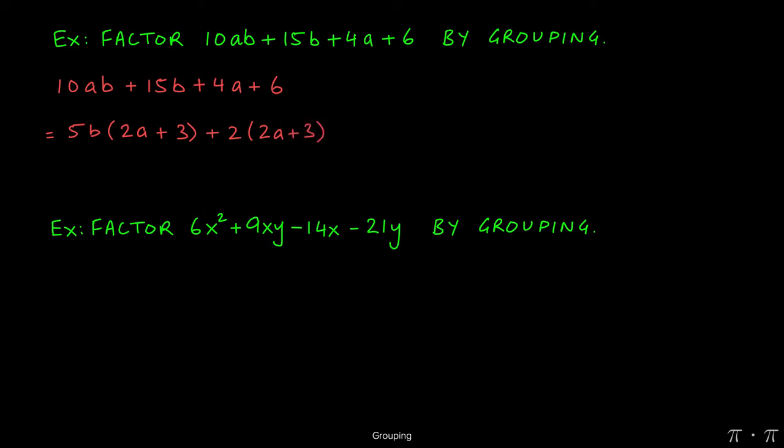Now both terms have (2a + 3) in common, so we can factor it out. When we divide the first term by (2a + 3), we're left with 5b. When we divide the second term by (2a + 3), we're left with +2. So the final answer is (2a + 3)(5b + 2). That's it, question's over.